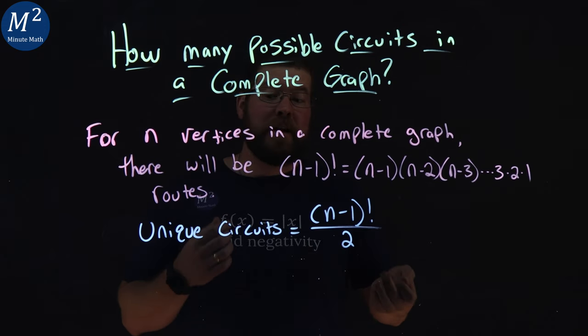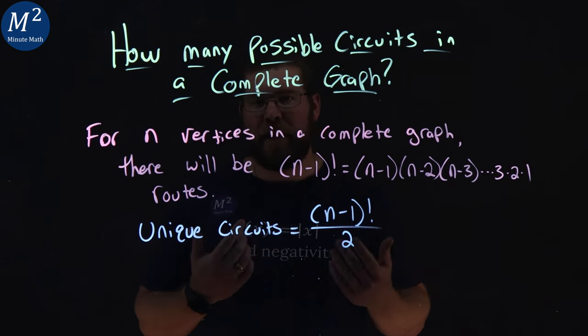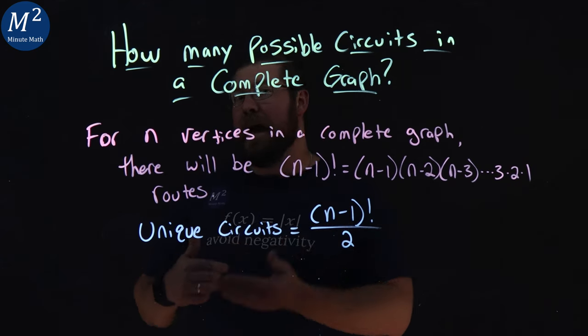So if we want to find unique circuits, we take that same n minus 1 factorial and divide it by 2 to get rid of that half.